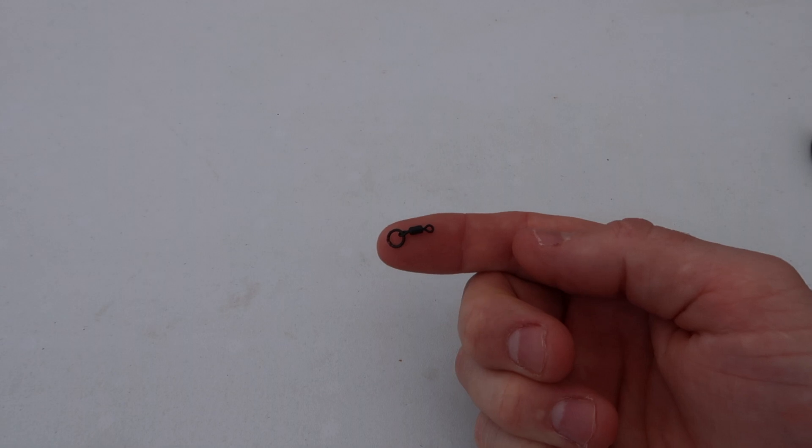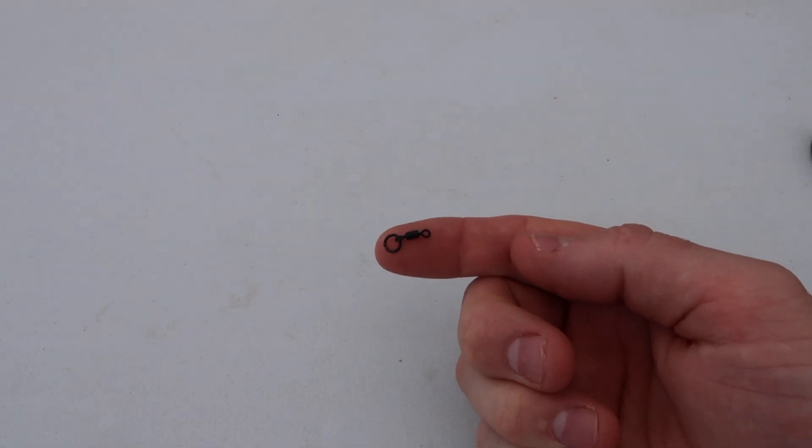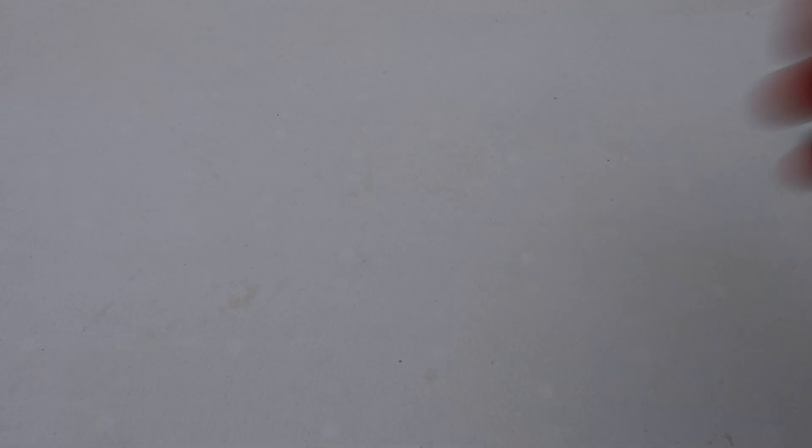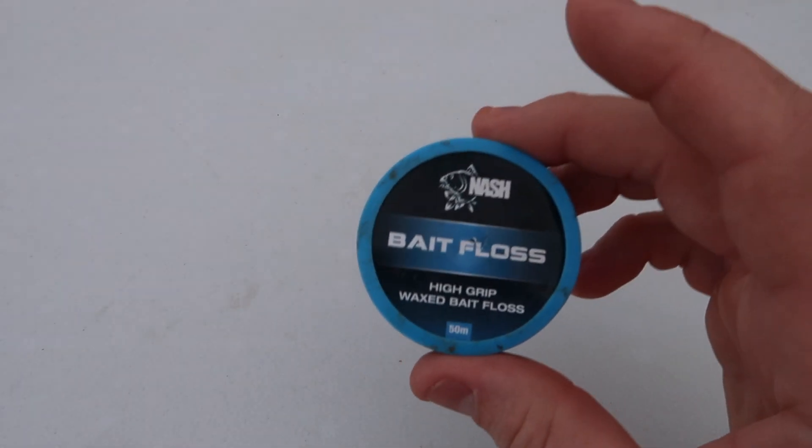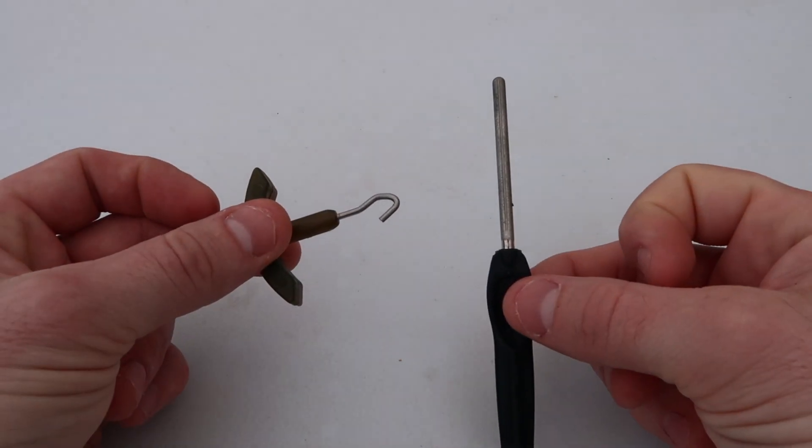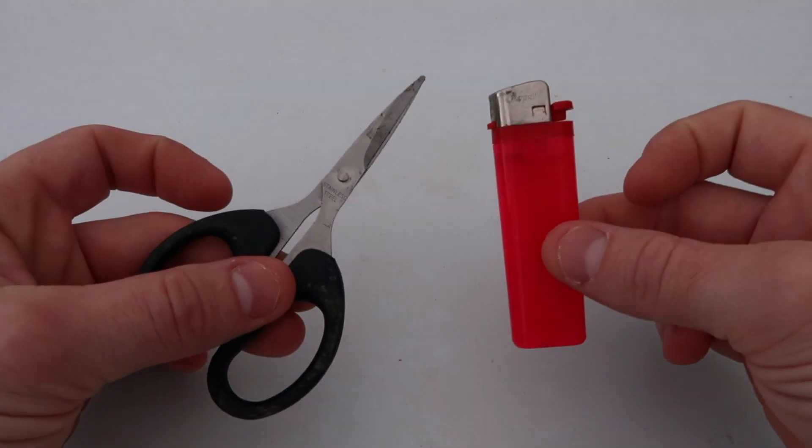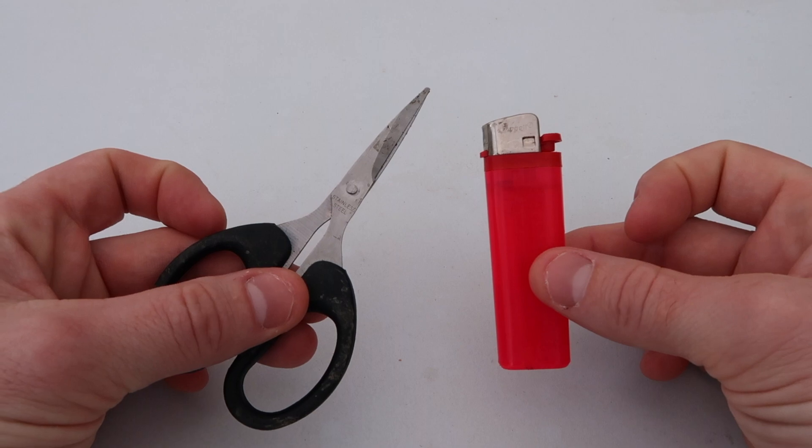A size 11 ring swivel, some tungsten putty, some bait floss, some pulley tools and some scissors, and a lighter for blobbing down the ends.